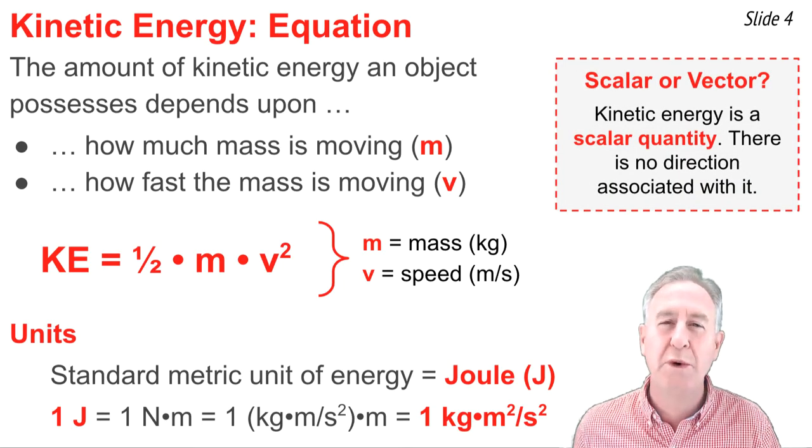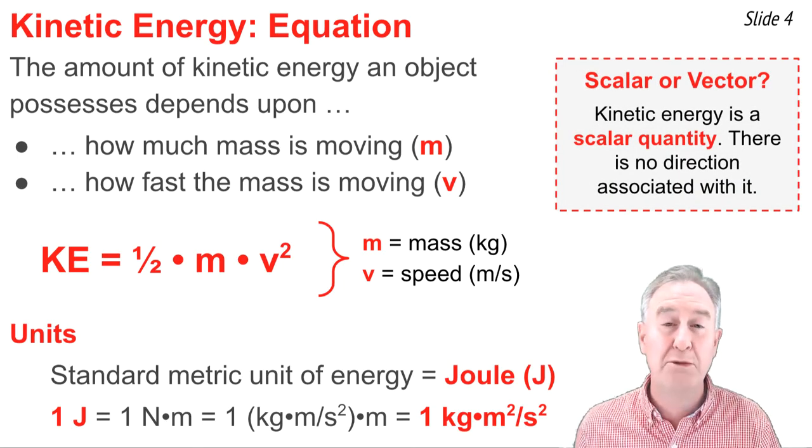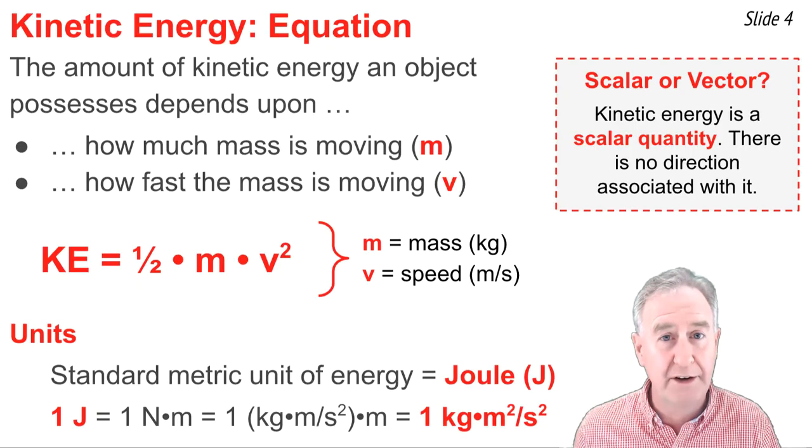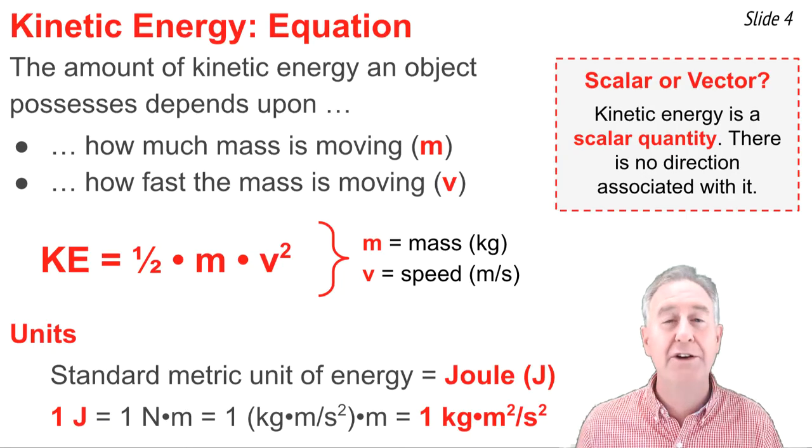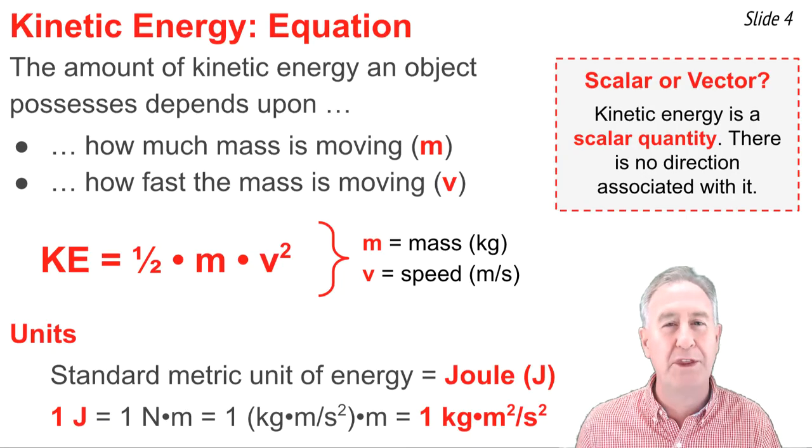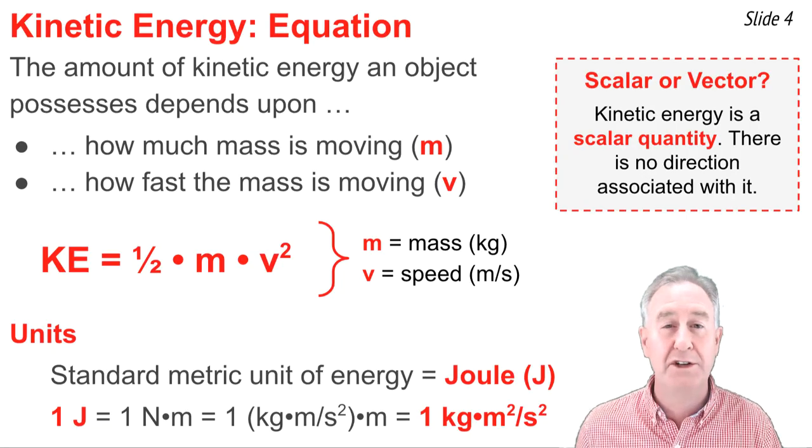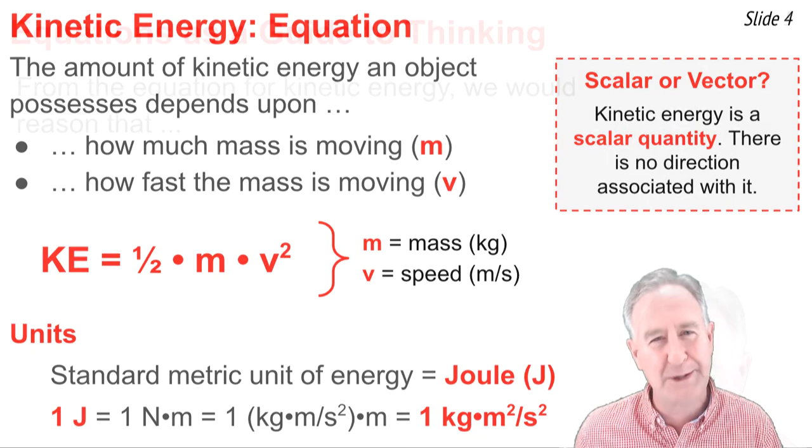Whenever we introduce a new quantity in physics, we identify it as being either a scalar or a vector. And when it comes to kinetic energy, kinetic energy is a scalar quantity. There is no direction associated with kinetic energy. The kinetic energy is fully described by numerical value alone.